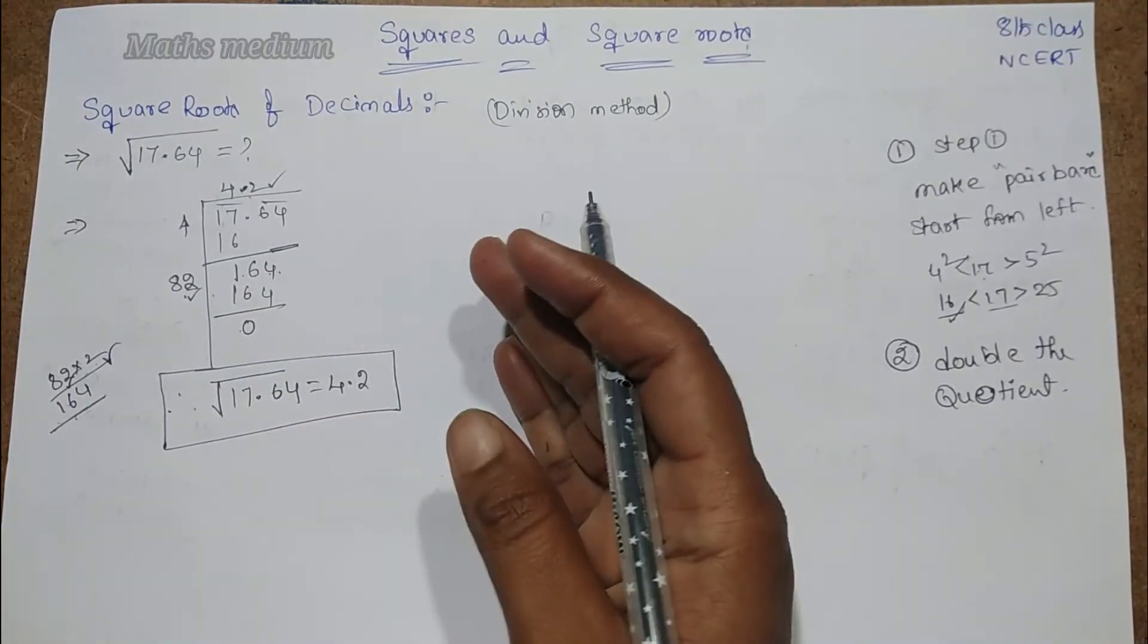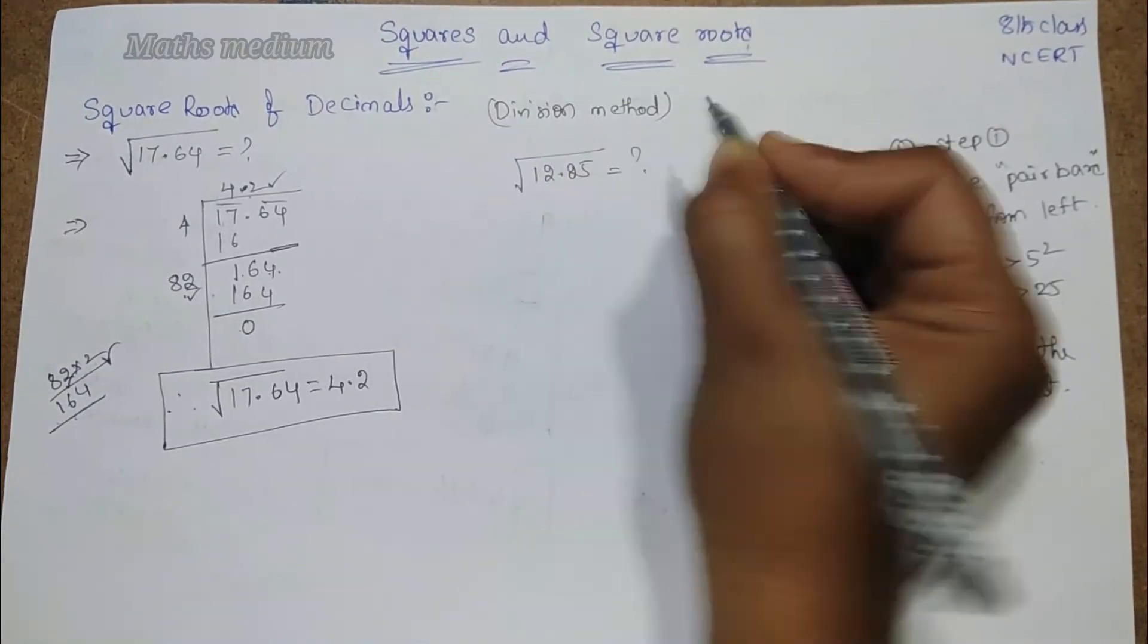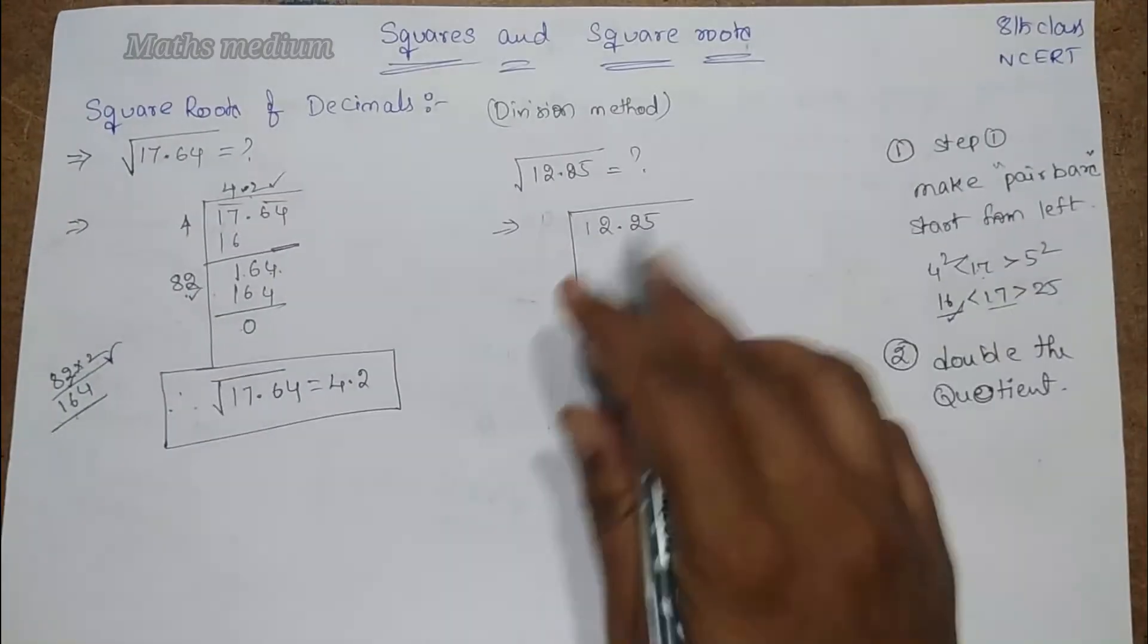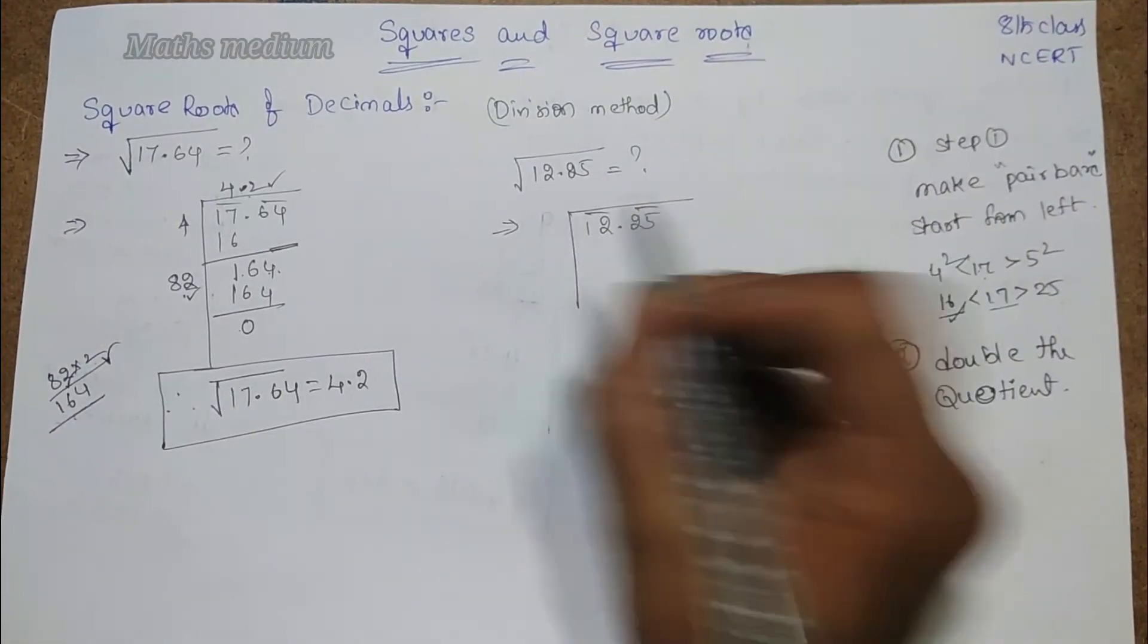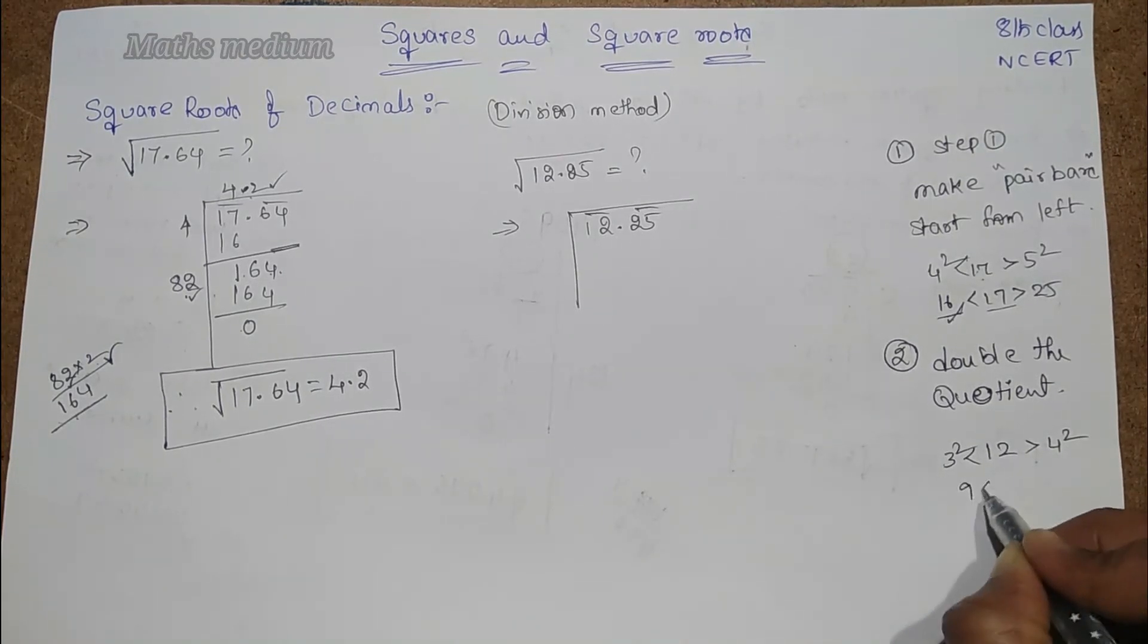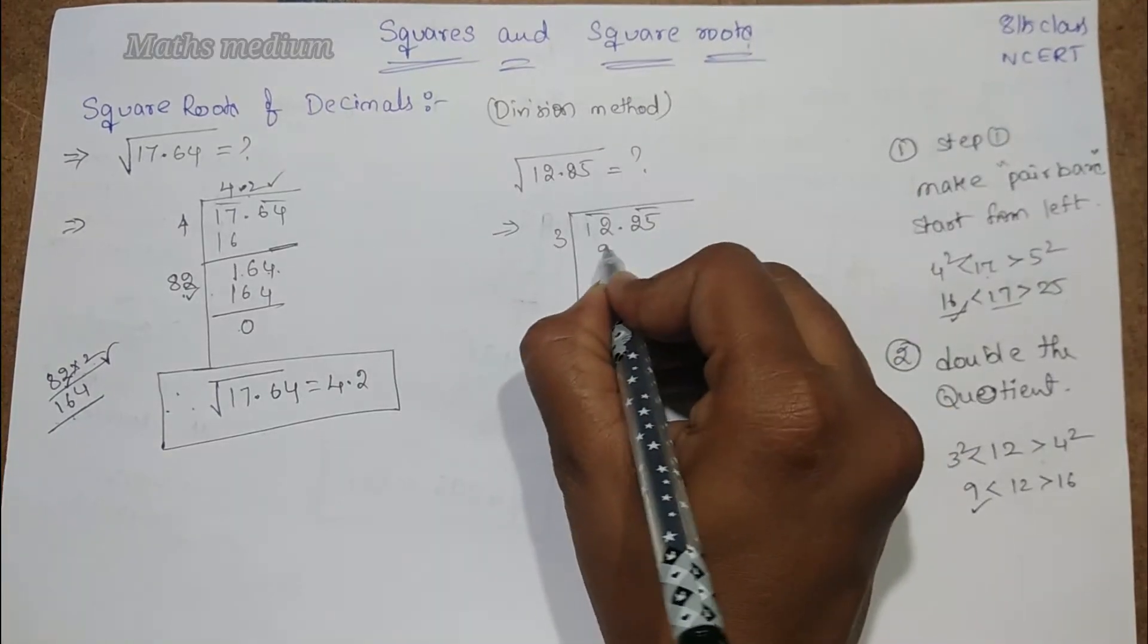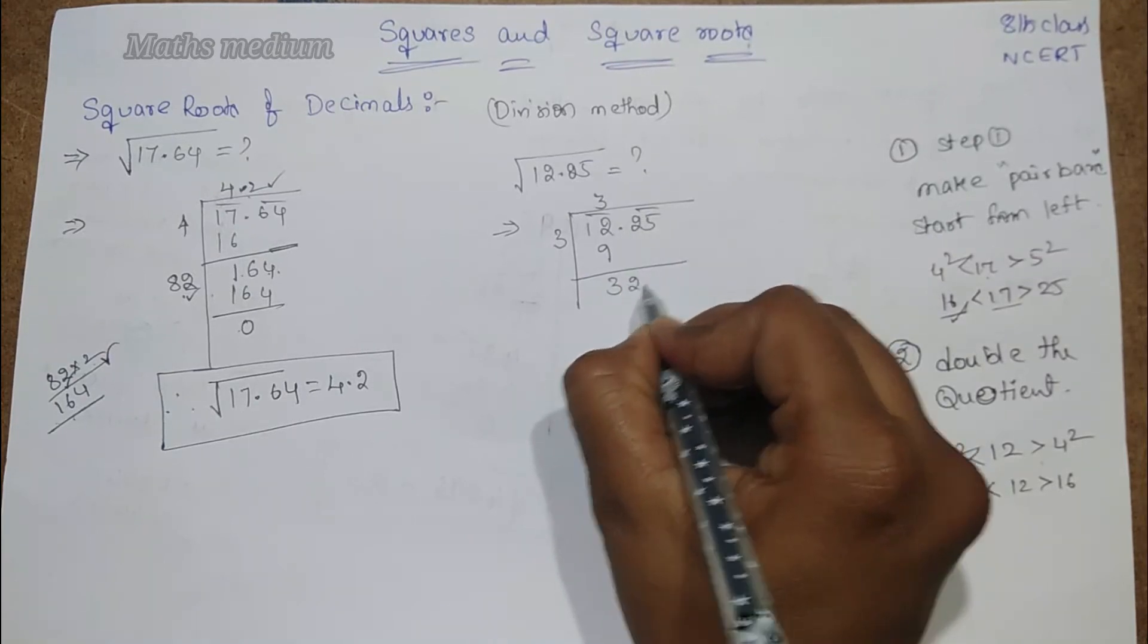I will explain with another question also. Take 12.25 as the square root of the given number. We have to find. Similarly, take 12.25. Now, make pair bars here and here. Start from left and here we can tell it as 12. Like between 4 square. This is 3 square. 9, 12, 16, right? It is less than 16 and greater than 9. So, take this. 3, 3's are 9. 3 is left here. Write down the 25 as it is.